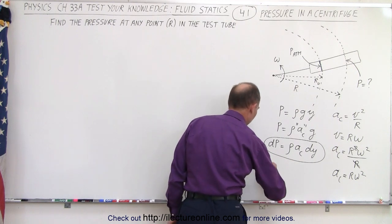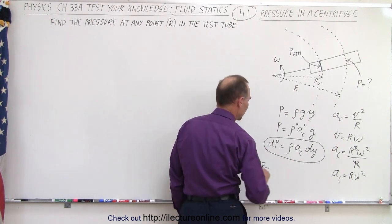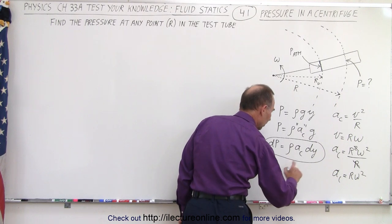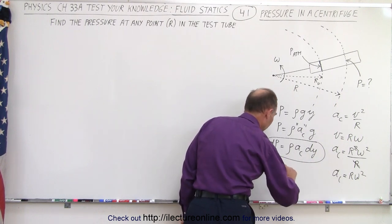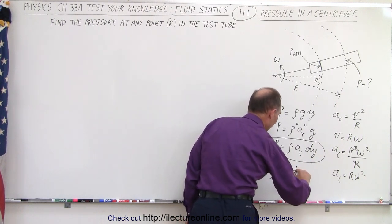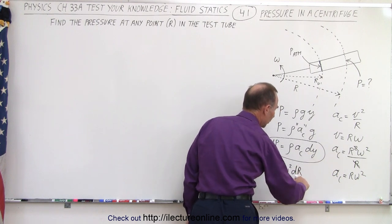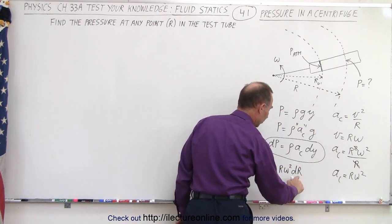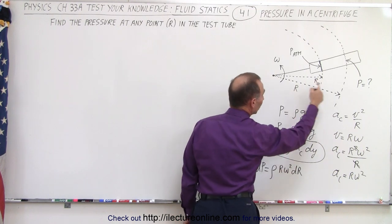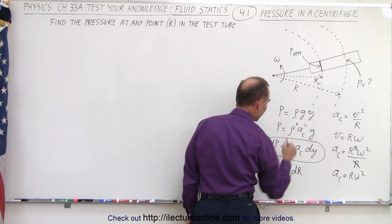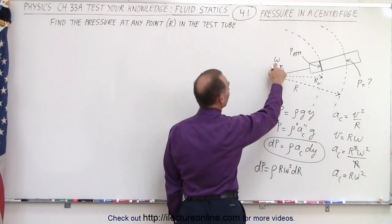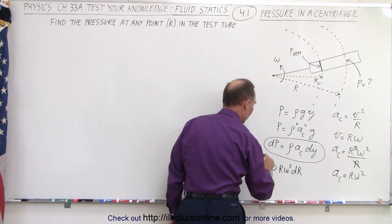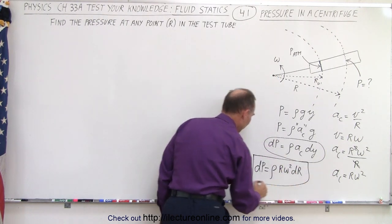So I can write the differential dp as being equal to the density times r times omega squared times dr. Instead of dy, I'll write dr, which is the length in the direction of the test tube. r is the distance to any point in the test tube, omega squared is the angular velocity squared, and rho is the density of the liquid.